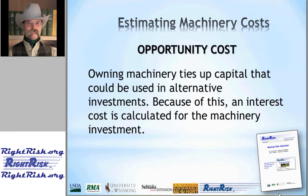The next category of fixed or ownership costs is an interest charge assigned to the machinery item, typically referred to as opportunity cost. When you purchase a machine, it ties up capital invested there — whether borrowed or paid from your own savings. It's appropriate to charge an interest rate on that invested capital, using an alternative investment rate — for example, what you would expect to earn if you put that capital into a savings account or other investment.